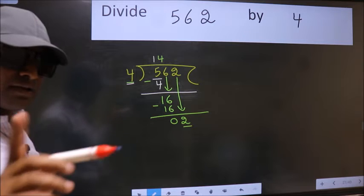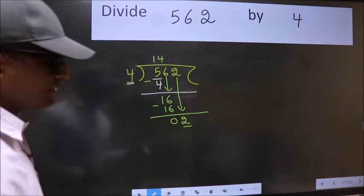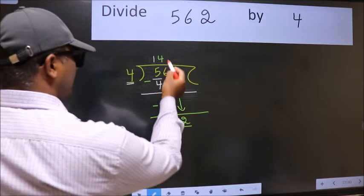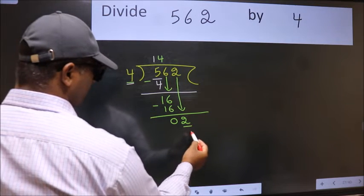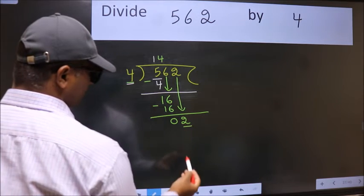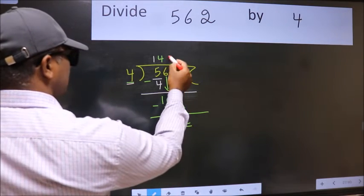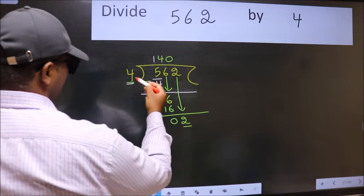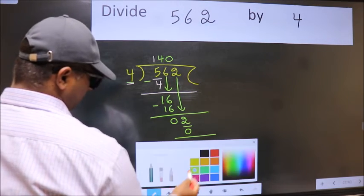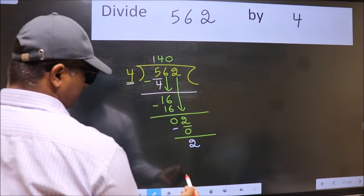Instead of that what we should think of doing is which number should we take here. If I take 1 we will get 4. But 4 is larger than 2. So what we do is we take 0 here. So 4 into 0 is 0. Now we subtract we get 2 here.